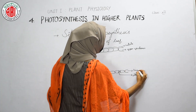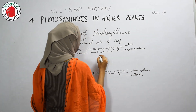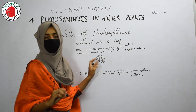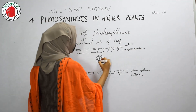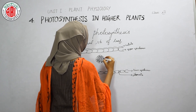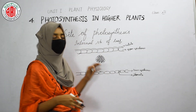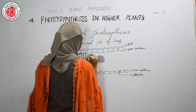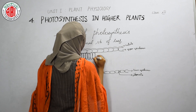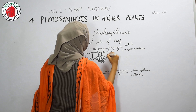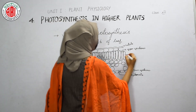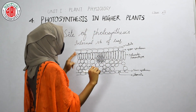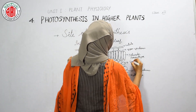In the leaf we also find vascular bundles, which contain tissues called xylem and phloem. Xylem helps in transporting water and minerals, while phloem helps in the transportation of food material. Beneath the upper epidermis, some compactly arranged parenchymatous cells are present called palisade parenchyma. Beneath the palisade parenchyma, some loosely packed parenchymatous cells are present called spongy parenchyma. The cells in the middle part of the leaf are termed mesophyll cells.